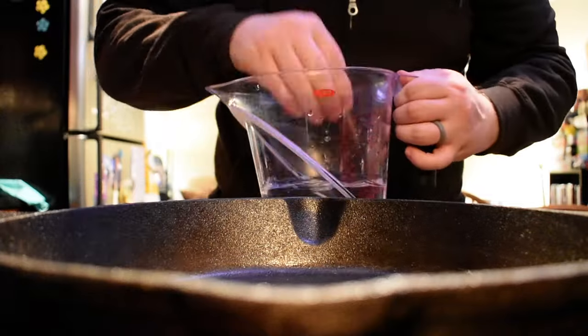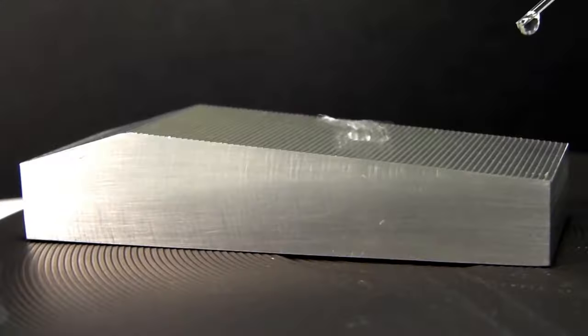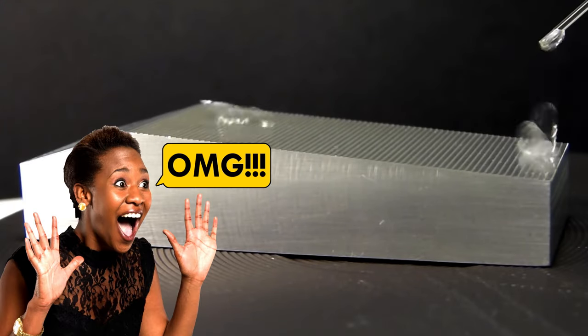When you drop liquid water onto a hot surface, it quickly boils into steam. But heat that plate up even more, and the droplets skitter and slide across the plate without appearing to boil at all. What is going on? Congratulations! You've achieved Leidenfrost.